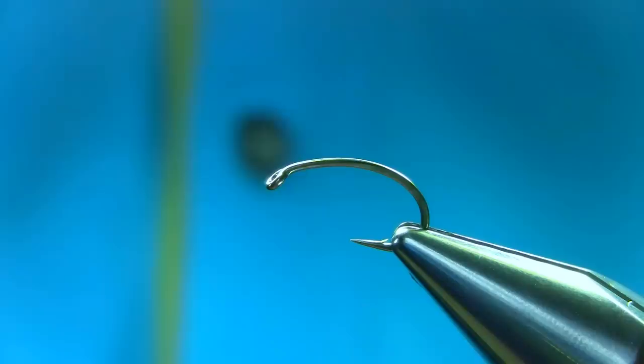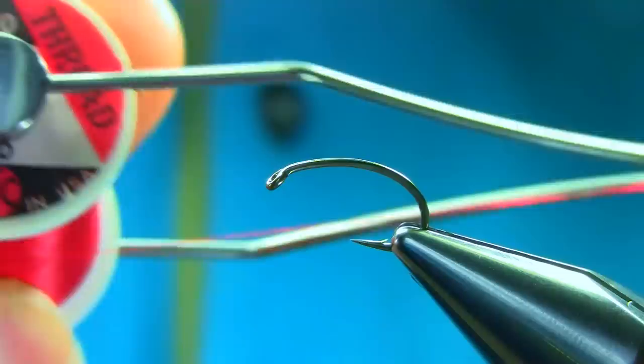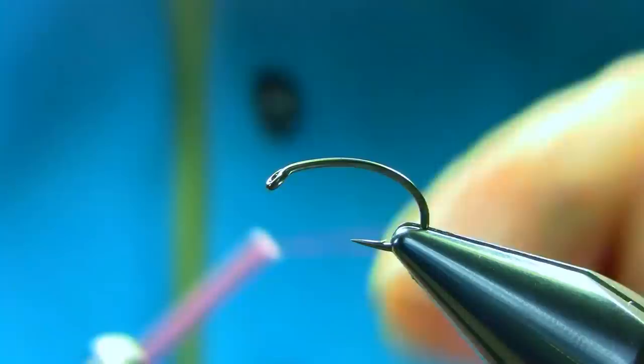This is a size 10 buzzer hook and I will show the material as I go along. First thread I'm using is UTC70, color is red.